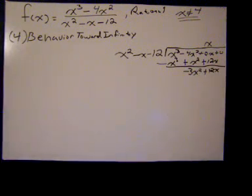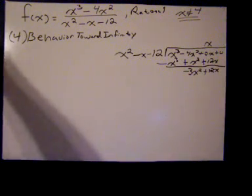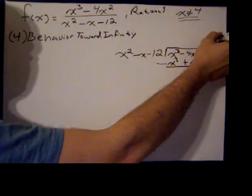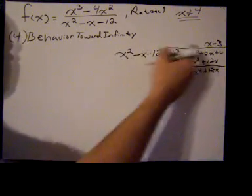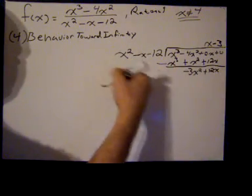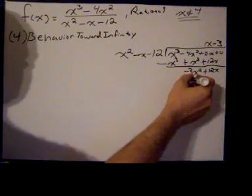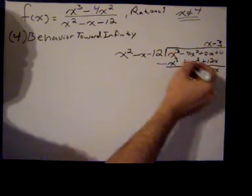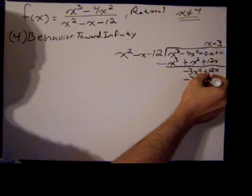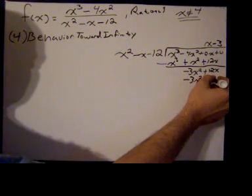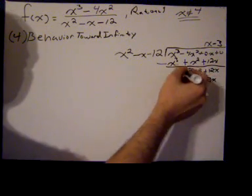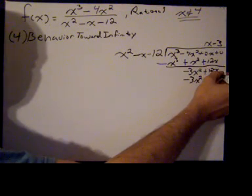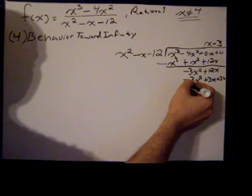We could still divide x squared into negative 3x squared, so we do so. x squared going to negative 3x squared, negative 3 times. Same process as before, negative 3 times x squared is negative 3x squared, negative 3 times negative x is plus 3x, and then negative 3 times negative 12 is positive 36. Sorry, I'm running out of room there.